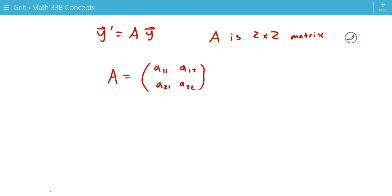So, the eigenvalues of A we can find by looking at A minus lambda I. It's going to be A11 minus lambda, A12, A21, and A22 minus lambda.